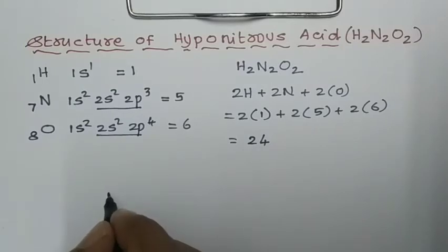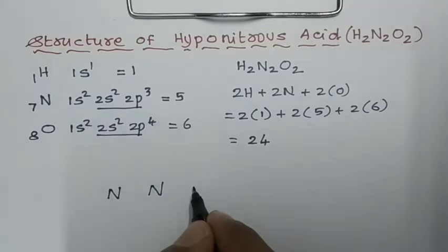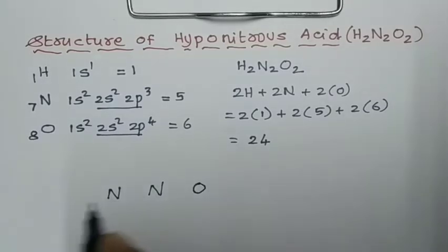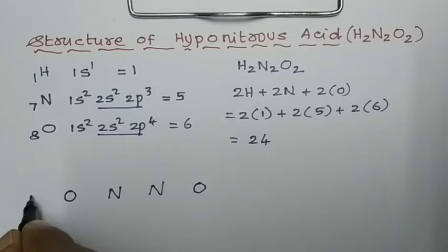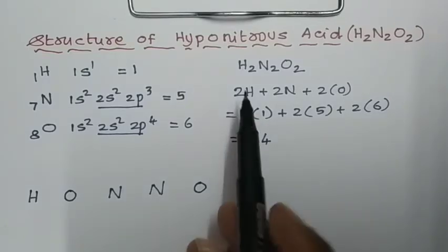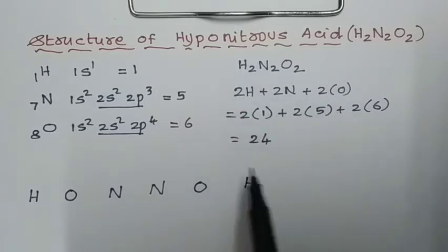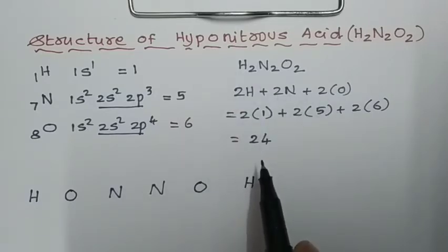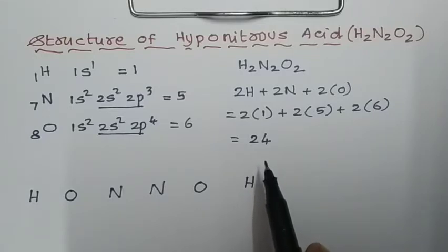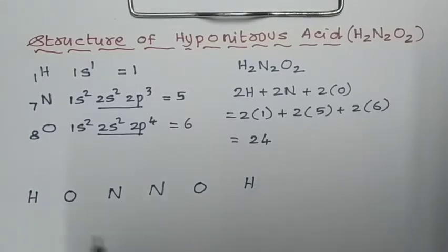We have 2 nitrogen atoms, so first write the nitrogen atoms. Next, write one oxygen on each side of the nitrogen atoms. Then place hydrogen as terminal atoms. Remember: depending upon the number of hydrogen atoms, all oxoacids of nitrogen contain OH groups — 1 hydrogen means 1 OH, 2 hydrogen means 2 OH, and so on.